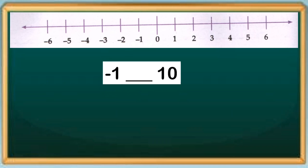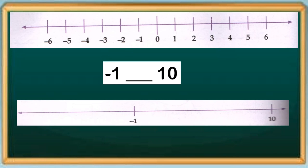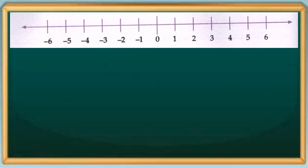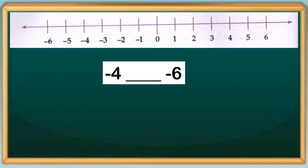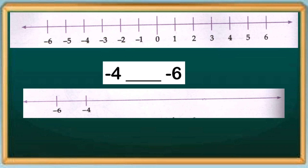Next: negative one and positive ten. Negative one is on the left side of positive ten. Therefore, negative one is less than positive ten — our answer is less than. Next, let's compare negative four and negative six. Negative six is on the left side of negative four. Therefore, negative four is greater than negative six — our answer is greater than.